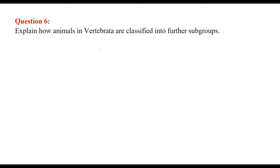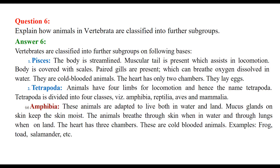Explain how animals in Vertebrata are classified into further subgroups. In Pisces, animals are streamlined and have a muscular tail for locomotion. The body is covered with scales. Paired gills are present and they breathe oxygen dissolved in water. They are cold-blooded animals with a two-chambered heart, and they lay eggs.